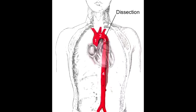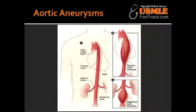What are aortic aneurysms at the level of the abdominal and descending aorta commonly associated with? Aortic aneurysms at the level of the abdominal and descending aorta are commonly associated with atherosclerosis.